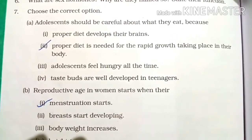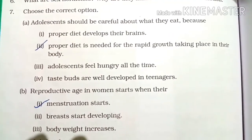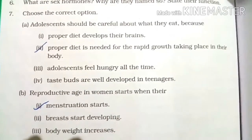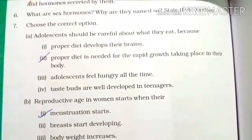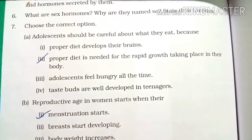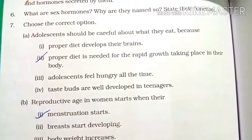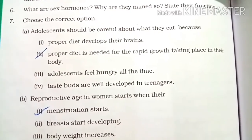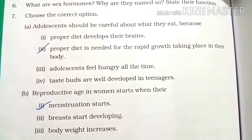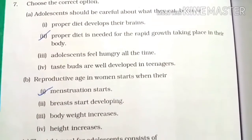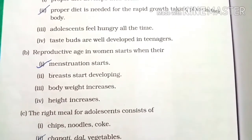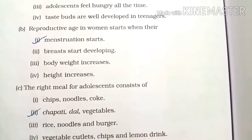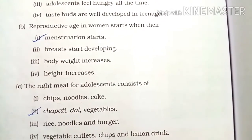Choose the correct option. Adults should be careful about what they eat because proper diet is needed for the rapid growth taking place in their body. Reproductive age in humans starts when their menstruation starts. The right meal for adolescents consists of chapati, dal, and vegetables.